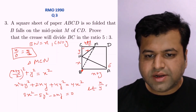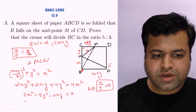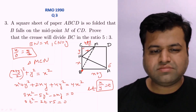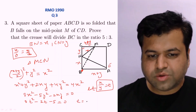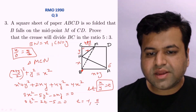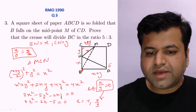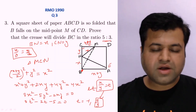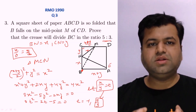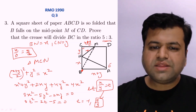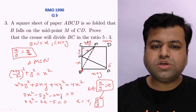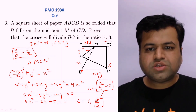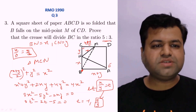Dividing by y² and letting t = x/y, the equation becomes 3t² - 2t - 5 = 0. This quadratic gives roots t = -1 and t = 5/3. Since t must be positive, x/y = 5/3. This proves the crease divides BC in the ratio 5:3. It's a straightforward Pythagorean theorem application — a Class 8 student could solve it.